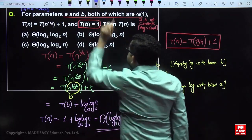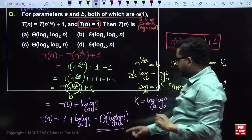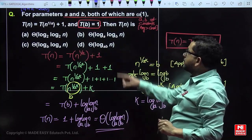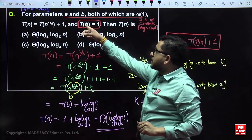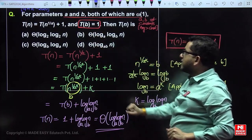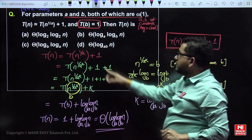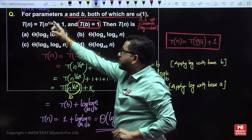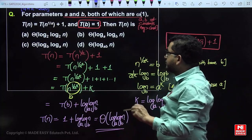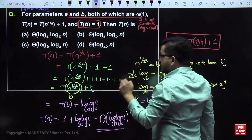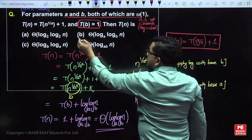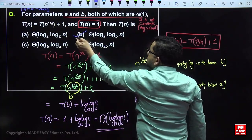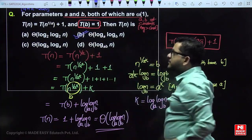So the answer to this question is T(n) = Θ(log log n), where the outer base corresponds to the termination value b and the inner base corresponds to the a-th root operation.